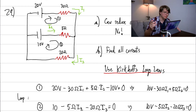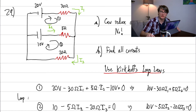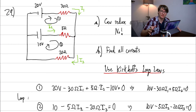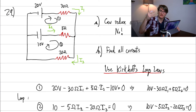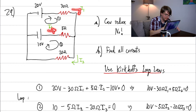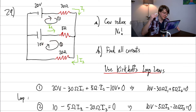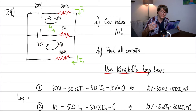The key thing with these problems is to be consistent and methodical as you write down voltages and currents. Choose current directions and loop directions, then go with them. For each element in a loop: if you traverse a battery in the direction it points, it adds voltage; if opposite, it subtracts. For a resistor traversed in the same direction as the current, it subtracts voltage (V = IR); opposite direction means it adds.